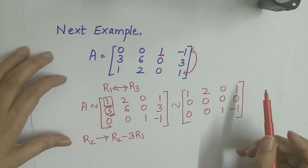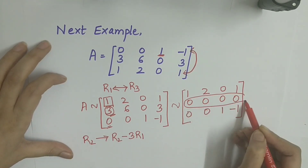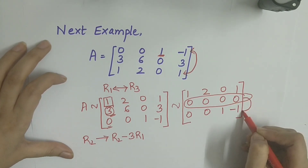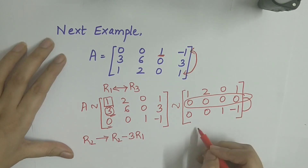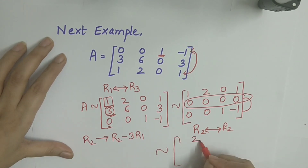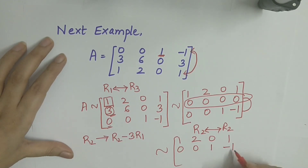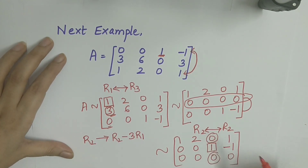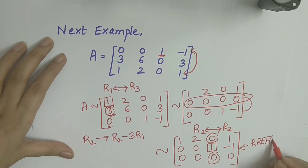Here we have a row of all zeros which should be at the bottom, so we interchange rows 2 and 3. Now the matrix becomes equivalent to [[1,2,0,1],[0,0,1,-1],[0,0,0,0]]. The leading entry of the second row is now 1 and the entries below and above are already 0. So this is the reduced row echelon form of A.